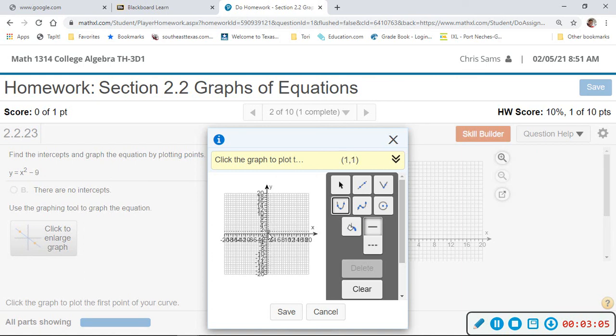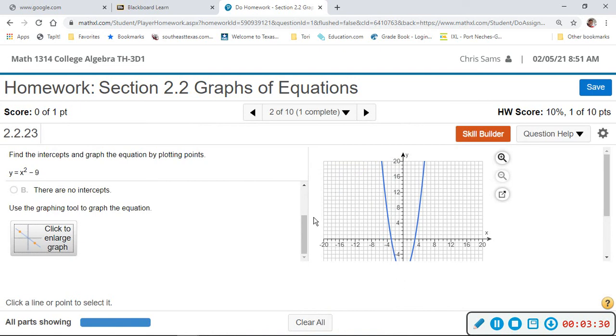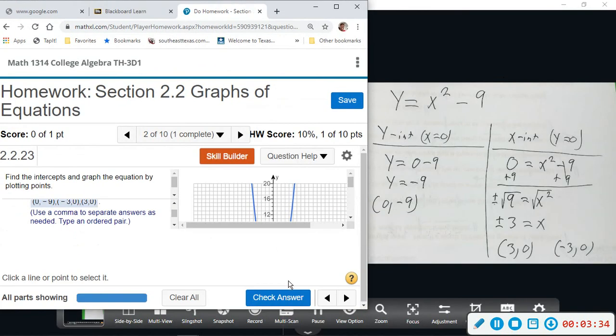So I'm going to go to negative three, negative three zero, and then zero negative nine, and then positive three zero. And I'm also looking up there to see the ordered pairs. It's kind of hard to adjust that. And now we can check to see if that is okay.